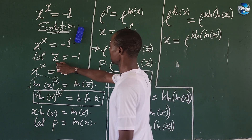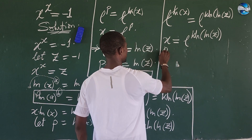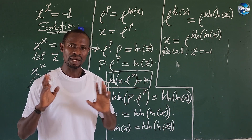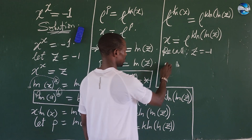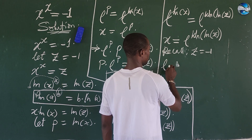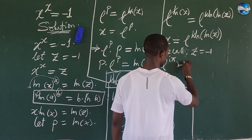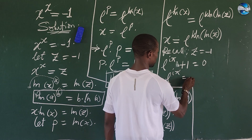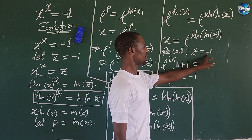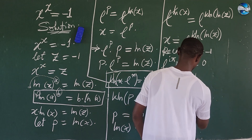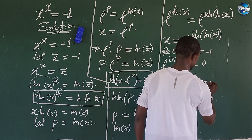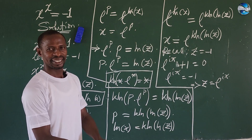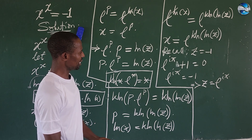Recall that z equals minus one. That brings to mind Euler's identity, which says e to the power of i·pi plus one equals zero. Moving the one over, we have e to the power of i·pi equals minus one. And here we have z equal to minus one, so z equals e to the power of i·pi.